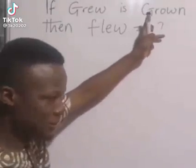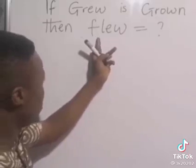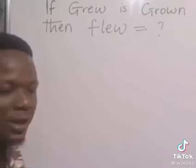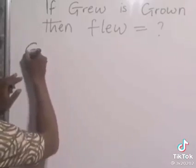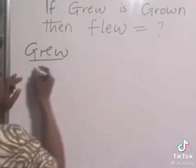So grew is to grown, of course the past tense and the past participle. Then flew, which is a past tense, we want to get the past participle. Look at what the mathematician will do: grew all over grown.